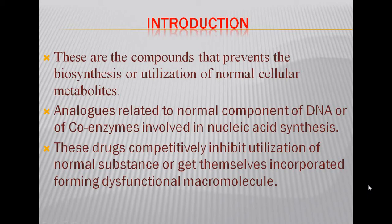These analogues are related to the normal components of DNA or coenzymes which are involved in nucleic acid synthesis. These drugs competitively inhibit the utilization of normal substances or get themselves incorporated, forming dysfunctional macromolecules. Uses include mercaptopurine for acute monocytic leukemia, methotrexate for epidermoid cancer of the head and neck, fluorouracil for colorectal cancer, and floxuridine for GI tract cancer.